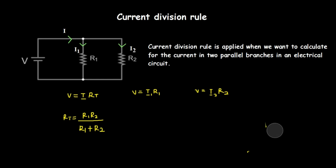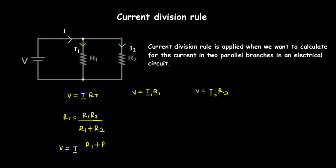Now that we know the formula for effective resistance, let's substitute it back. Voltage equals current i times R_t, and we know R_t equals R1 times R2 divided by R1 plus R2. So voltage equals i times R1 times R2 divided by R1 plus R2.